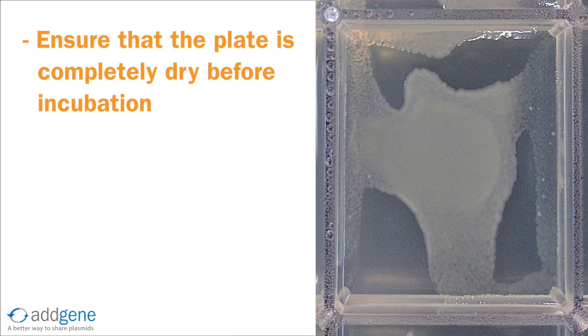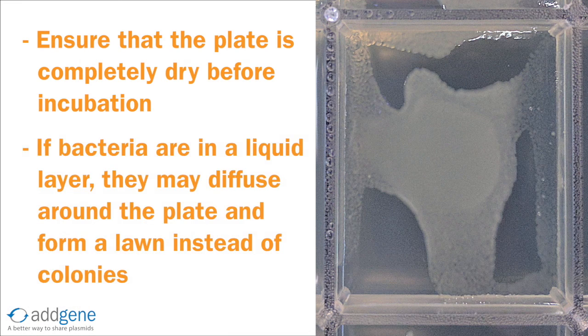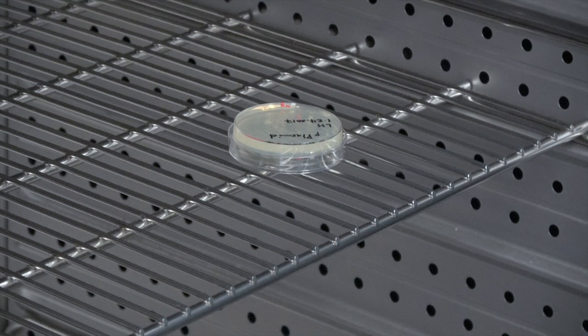Be sure that the plate is completely dry before incubation. If the bacteria are in a liquid layer above the agar, they'll diffuse around the plate and the daughter cells will form a lawn instead of a colony. Remember to place the plate upside down so that condensation doesn't drip onto the colonies and disturb them.